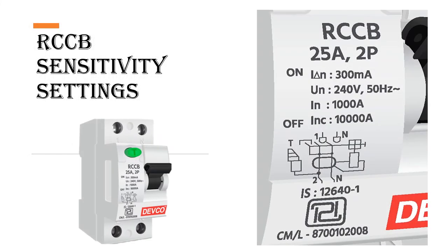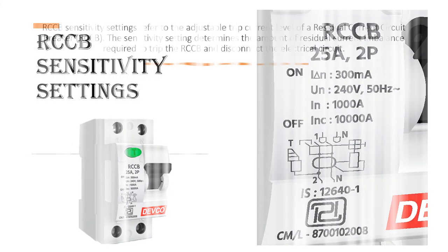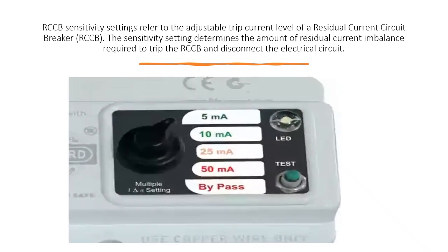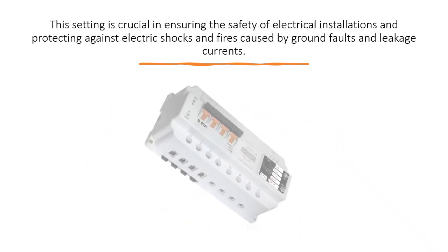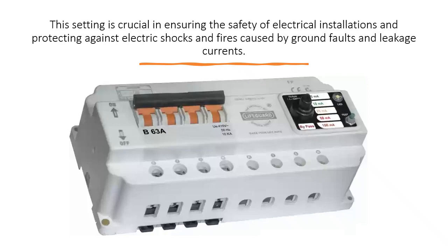RCCB Sensitivity Settings refer to the adjustable trip current level of a residual current circuit breaker. The sensitivity setting determines the amount of residual current imbalance required to trip the RCCB and disconnect the electrical circuit. This setting is crucial in ensuring the safety of electrical installations and protecting against electric shocks and fires caused by ground faults and leakage currents.